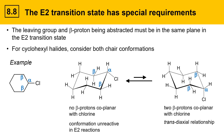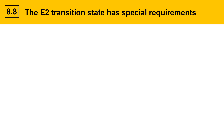The other relationship is with the other beta proton that's axial. There's another proton that could be abstracted by a base because it's trans-diaxial with the chlorine leaving group. Therefore, E2 reactions are possible from this chair conformation, leading to a cyclohexene product.